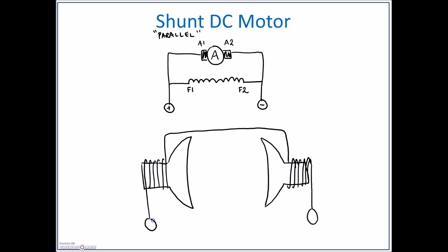The labels on the shunt are F1 and F2. Okay, and then on the inside, we've got our armature.